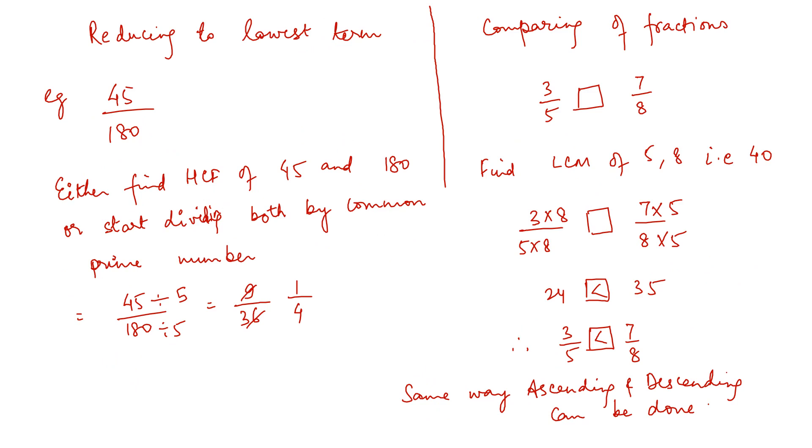Now reducing to the lowest term, if you remember we have done either by finding the HCF, you can refer the book and it is already explained in the class, or start dividing the number with the common prime number. It can be 3, 5, 7. You will see the number and you will understand. So 45 by 180 when divided by 5 gives 9 by 36 which can be further reduced to 1 by 4.